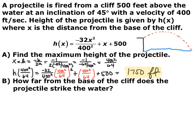I took 400²/64 and plugged that in for x every time I saw an x in the original function to find the y-coordinate: −32/400² × (400²/64)² + 400²/64 + 500. Plugging all of this into your calculator, you end up with 1,750 feet. So the highest the projectile gets is 1,750 feet off the water.